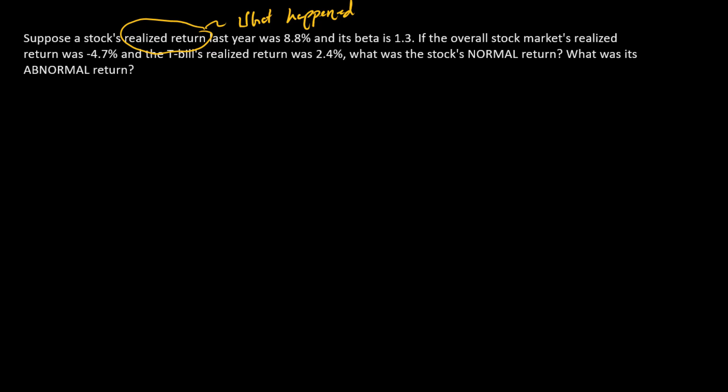Second thing is normal return. So a normal return is the return that an asset pricing model says should have happened, or the return that's explained by the model. And so here we're in a CAPM world. And so the normal return for the stock is just the part of the stock's realized return that is explained by the CAPM.